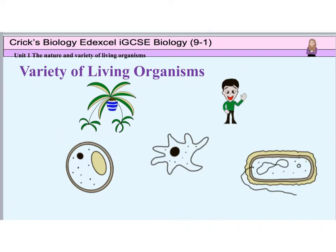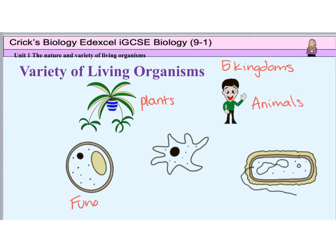Living organisms are classified into five groups or kingdoms, each of which has certain characteristics you need to learn. Eukaryotes are organisms which have cells containing a nucleus with a distinct membrane. Eukaryotic organisms can be multicellular or single-celled. Plants, animals, fungi, and protoctista are all eukaryotes.